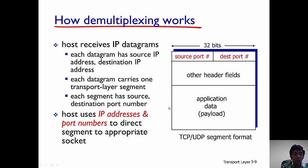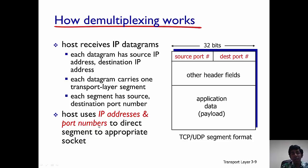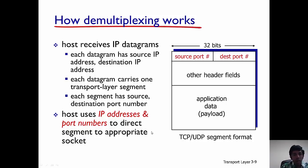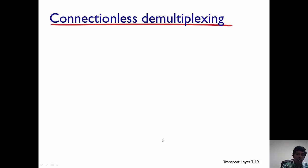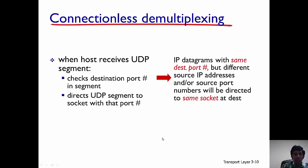The host uses the IP addresses provided in the IP datagrams and the port numbers to demultiplex and send the segment to the appropriate socket. We will now look at an example of how this works, starting with connectionless demultiplexing.